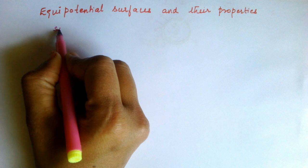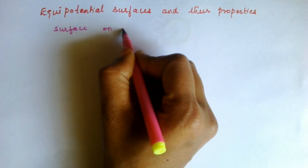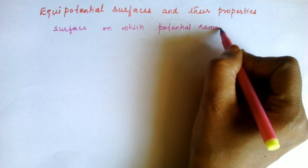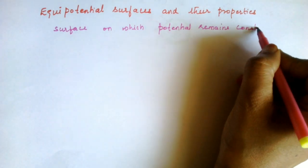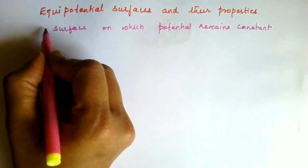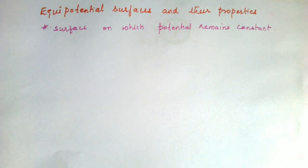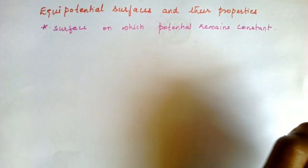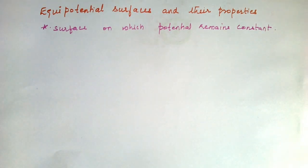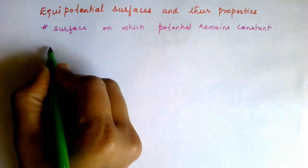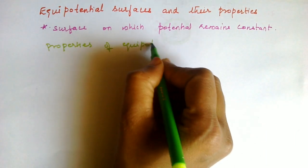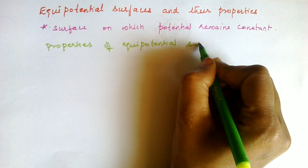Now let us look at equipotential surfaces and their properties. The name itself tells you: equipotential means a surface on which the potential remains constant. Any surface on which potential remains constant is called an equipotential surface.